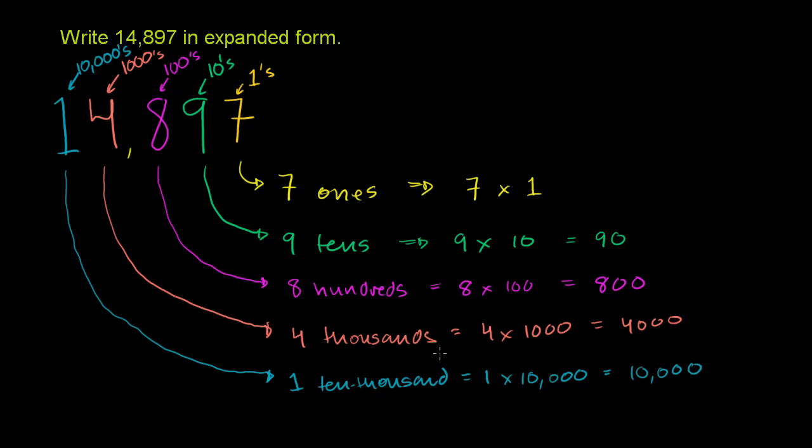So when they ask us to write it in expanded form, we could write 14,897 literally as the sum of these numbers, of its components. Or we could write it as the sum of these numbers.